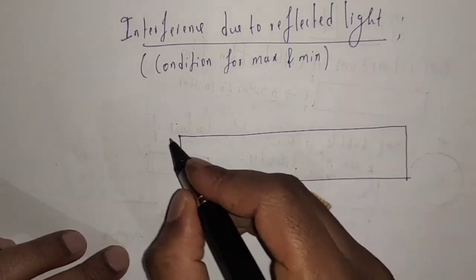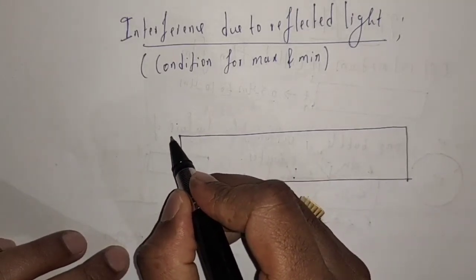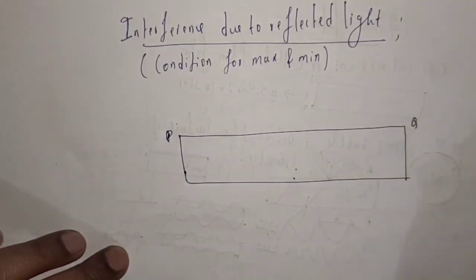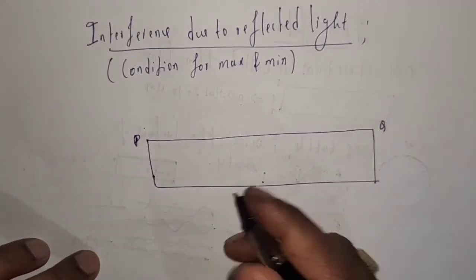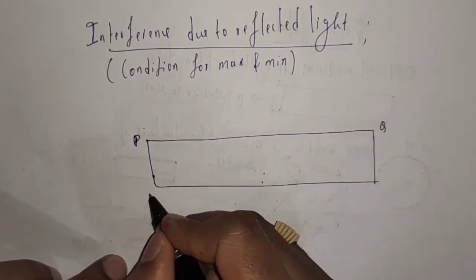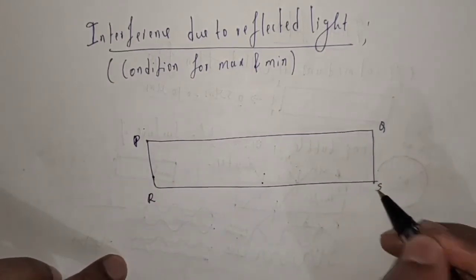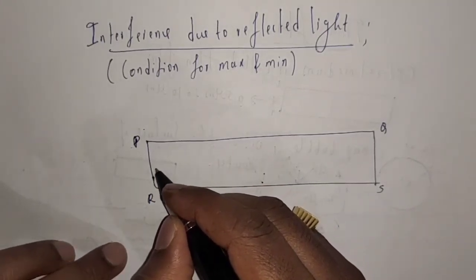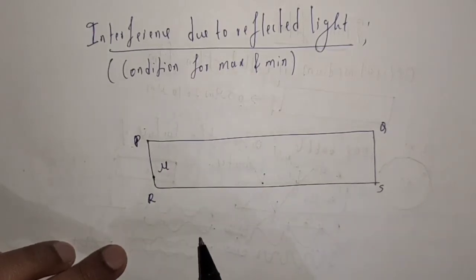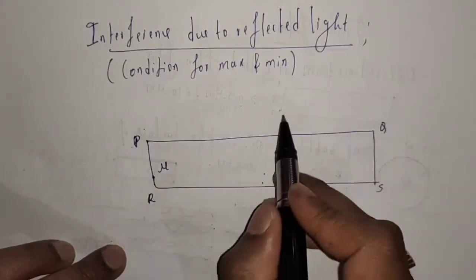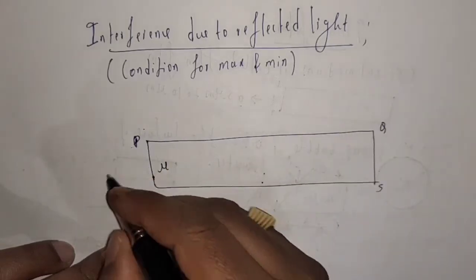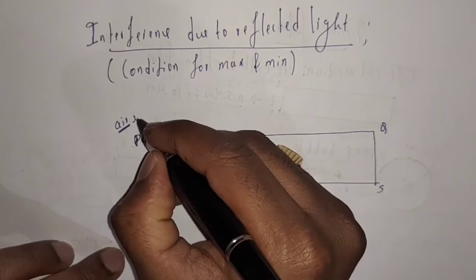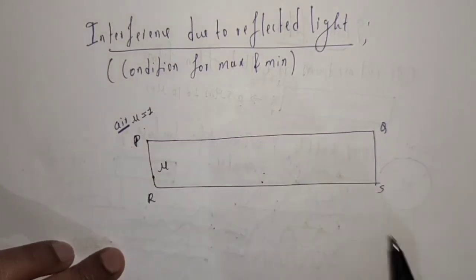Let us denote the top end of the thin film by PQ and the bottom side by RS, so PQRS is the thin film. It is having a refractive index mu, and this thin film is surrounded by air, which has refractive index mu equal to 1.